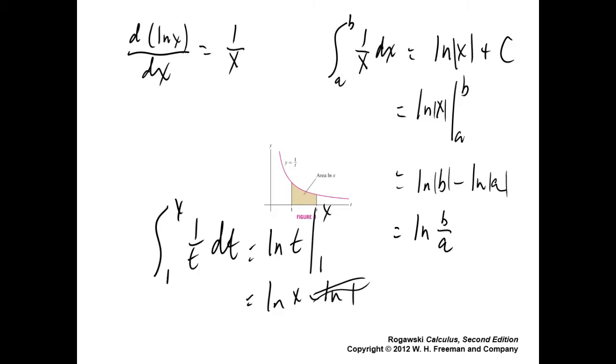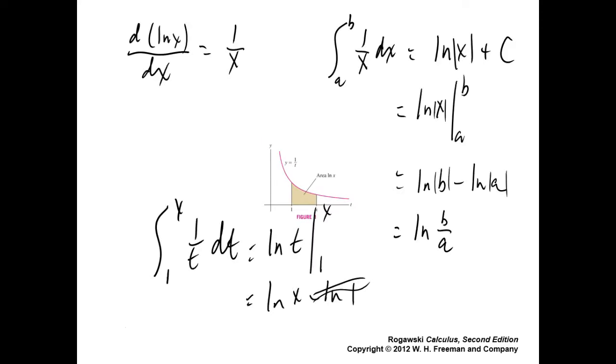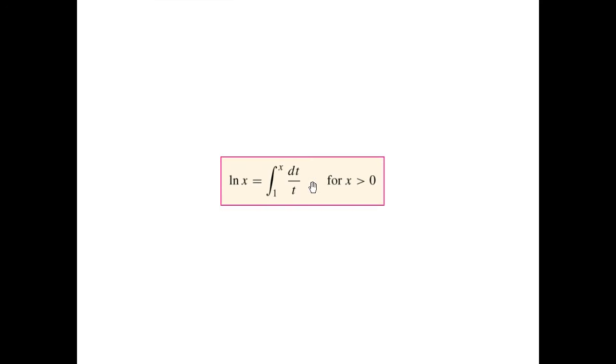And that leads to this definition. They had it beforehand — I'll blow this up so it's easier to read. That's exactly what we just said, but they also include the caveat that x has to be greater than zero.